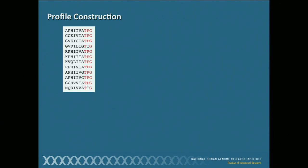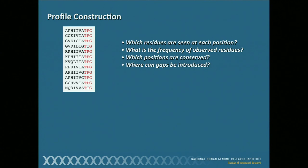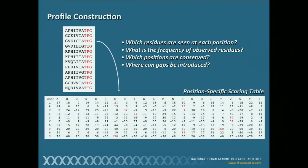Starting with this multiple sequence alignment, we're going to ask four questions to generate the numerical matrix: which residues are seen at each position; what are the frequencies of observed residues position by position — looking for conserved, semi-conserved, and non-conserved positions; and finally, where we can introduce gaps. This particular alignment is gap-free, but gaps are allowed.